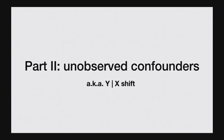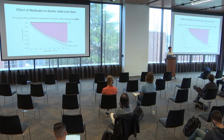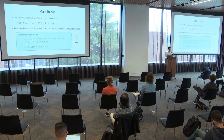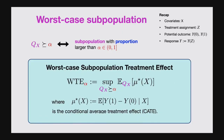Now I'm going to move on to unobserved confounders. In practice, for observational studies, we often have these types of confounding to worry about. In the remaining time, I'll think about how we can extend the no unobserved confounding condition. I'm going to imagine some unobserved confounding in my problem, but say it may not have that big an effect on the treatment decisions.